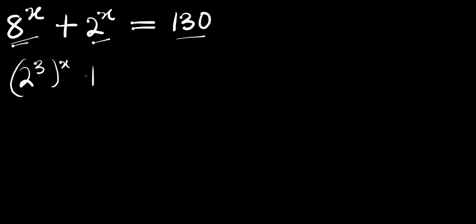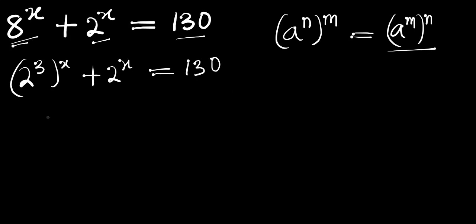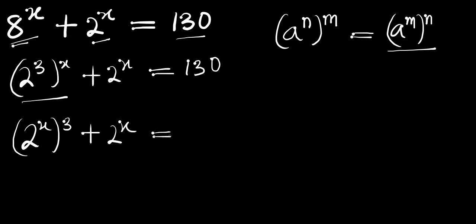We have 2^(3·x) + 2^x = 130. We make use of the identity: a^(n·m) = (a^m)^n. Applying this identity, we get 2^(x·3) = (2^x)^3, so we have (2^x)^3 + 2^x = 130.